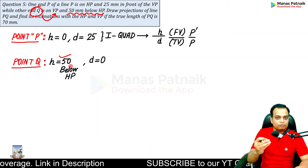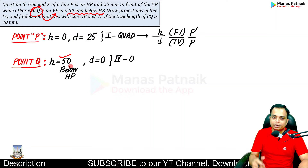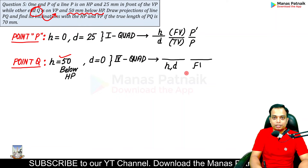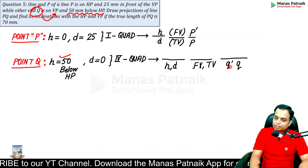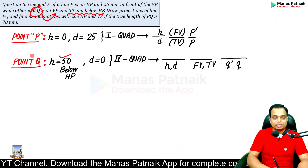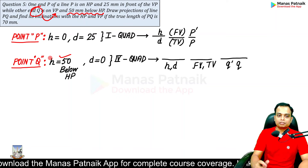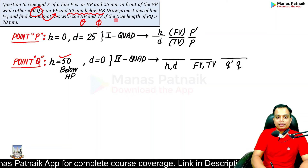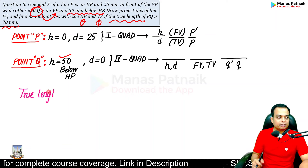Let's visualize point Q — it is a clear-cut case of the fourth quadrant. In the fourth quadrant, h and d are both below the x-y line, so both the front view and top view are below the x-y line. So Q-dash and Q are both below. The third thing we need to work out is theta and phi, given the true length of PQ is 70 mm.